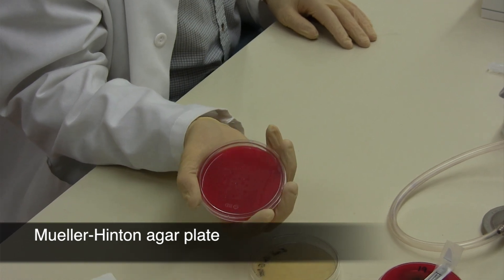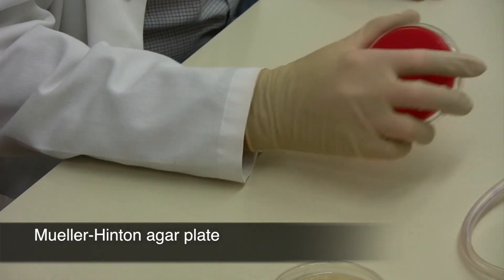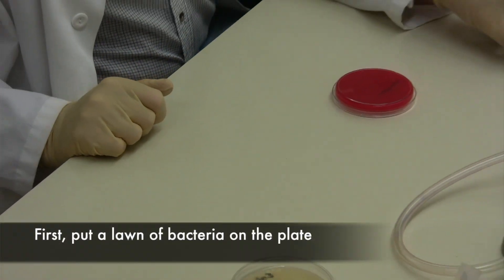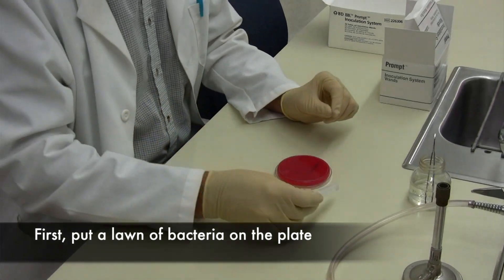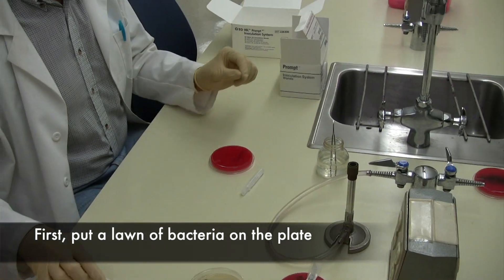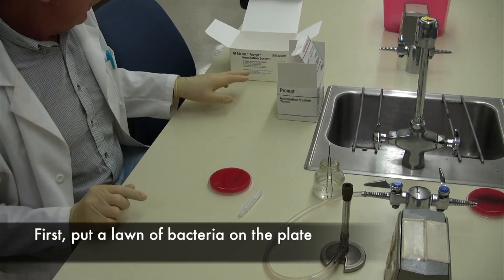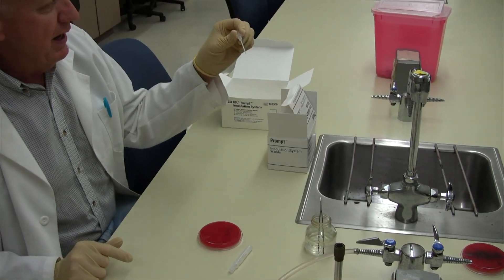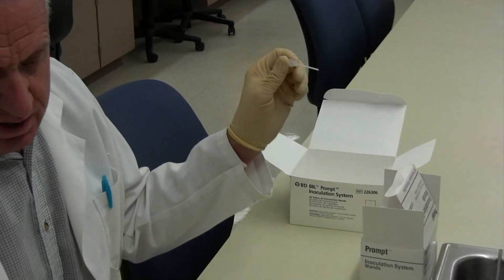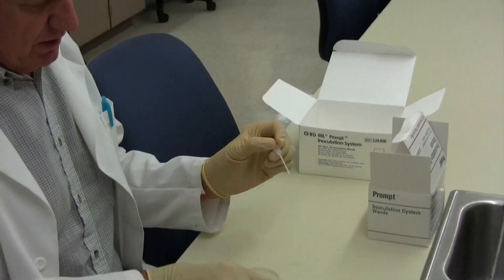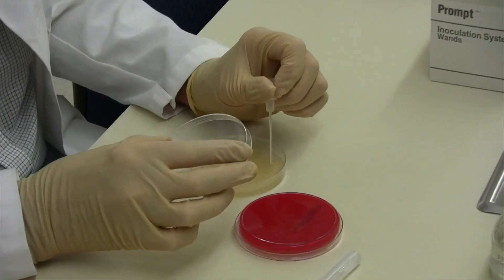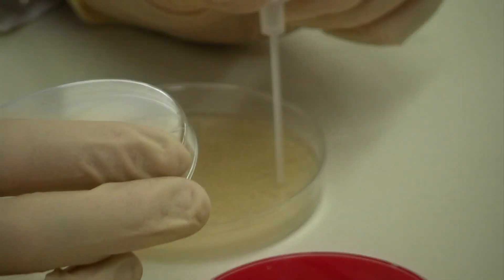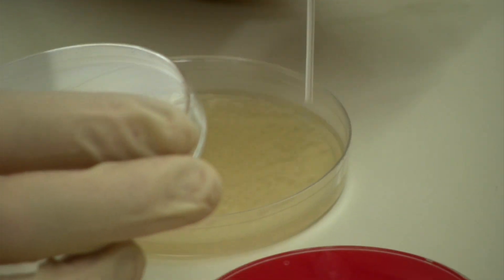This is Mueller-Hinton agar plus 5% sheep blood. To get the lawn on the plate, first use the prompt inoculation system here. Take a little wand and lightly touch two or three colonies of the bacteria to be tested.